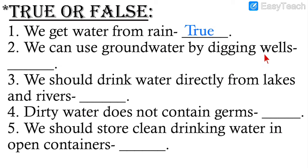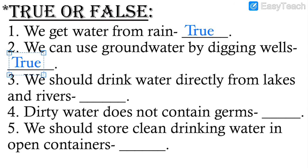Number two: We can use groundwater by digging wells — this is also a true statement. We use groundwater by digging wells and hand pumps. In villages, wells are dug and they are underground so that you can fetch out the underground water.